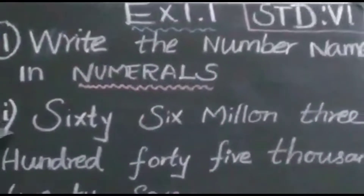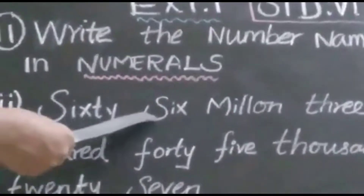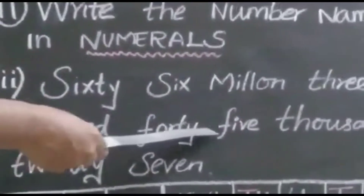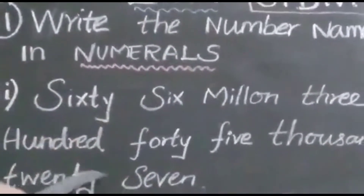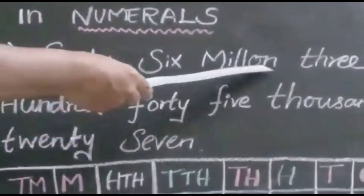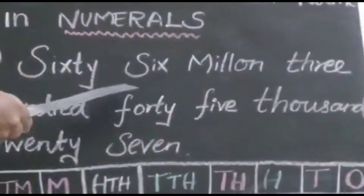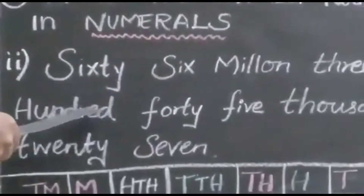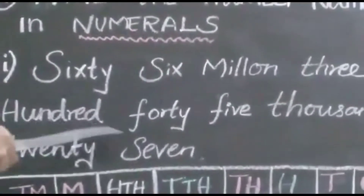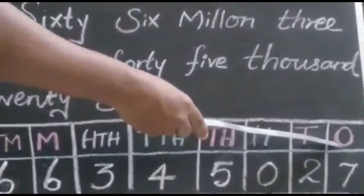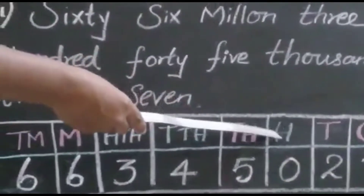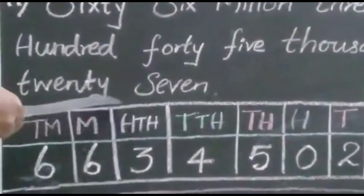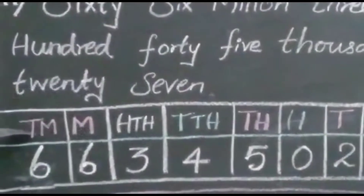Fourth question, second subdivision: 66 million 345,027. The word million is given, so this is the international number system. In the international number system, the place values are: 1, 10, 100, 1000, 10,000, 100,000, million, 10 million.